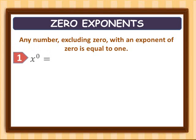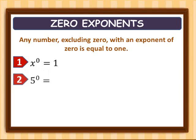x raised to zero is equal to one. Second example: five raised to zero is also equivalent to one.